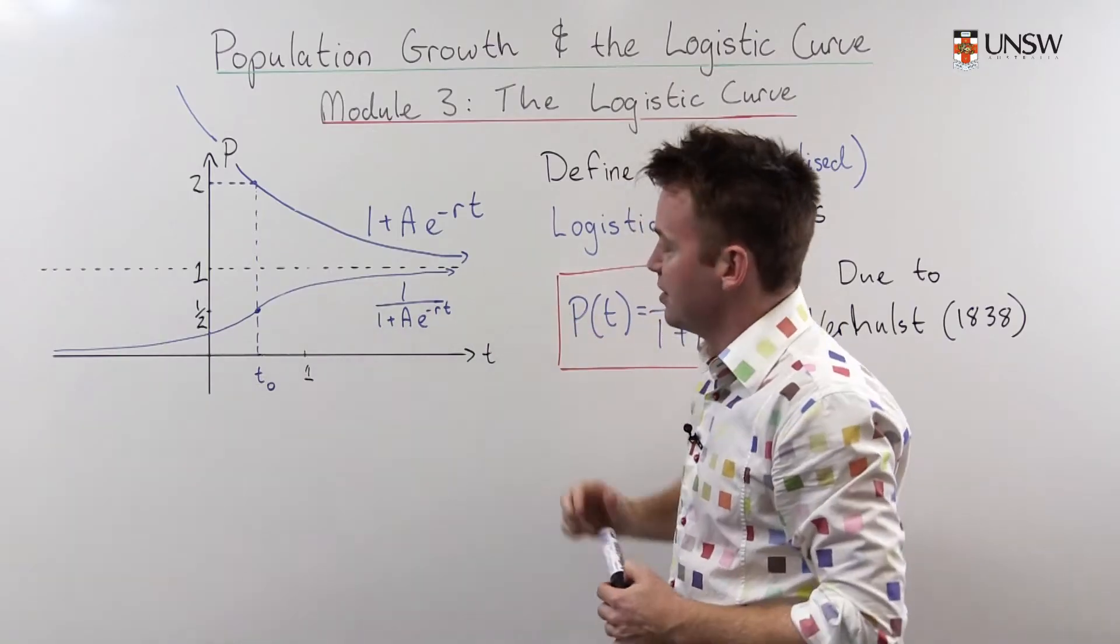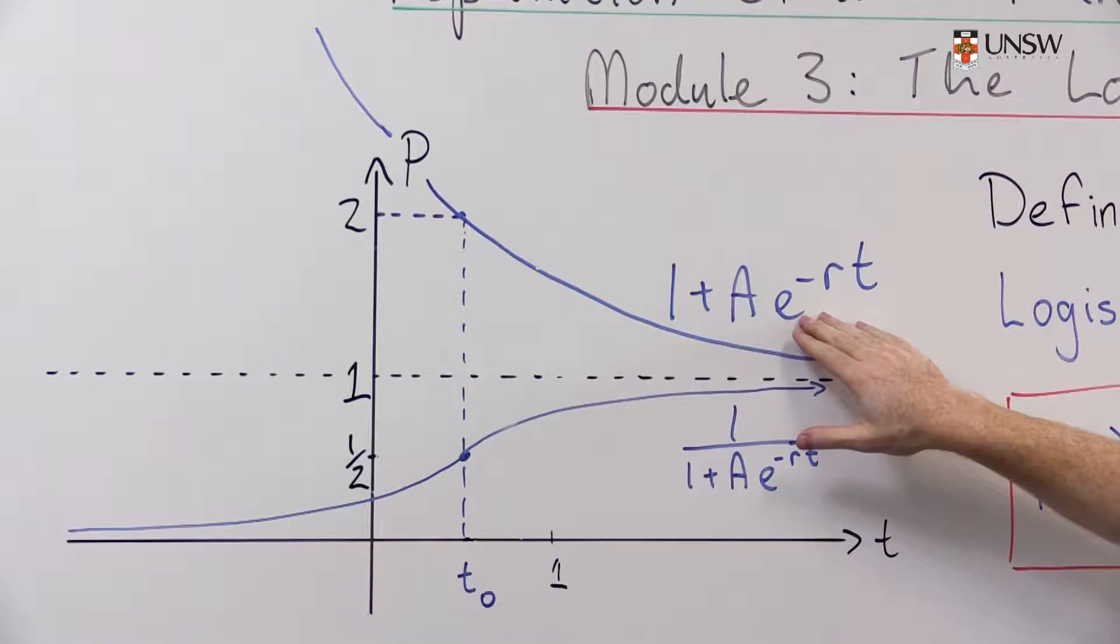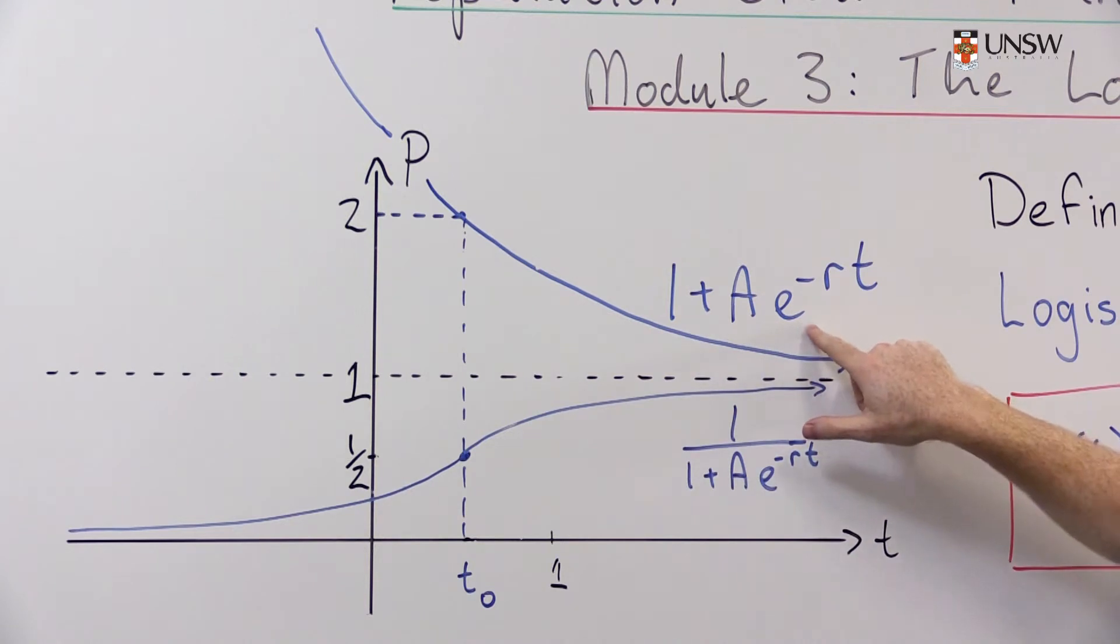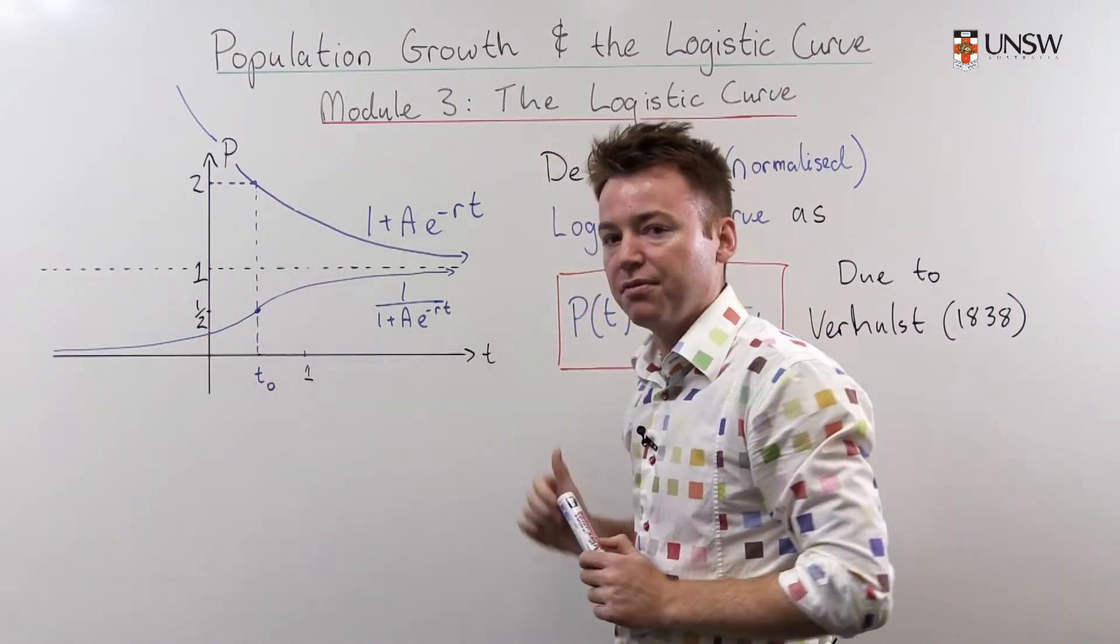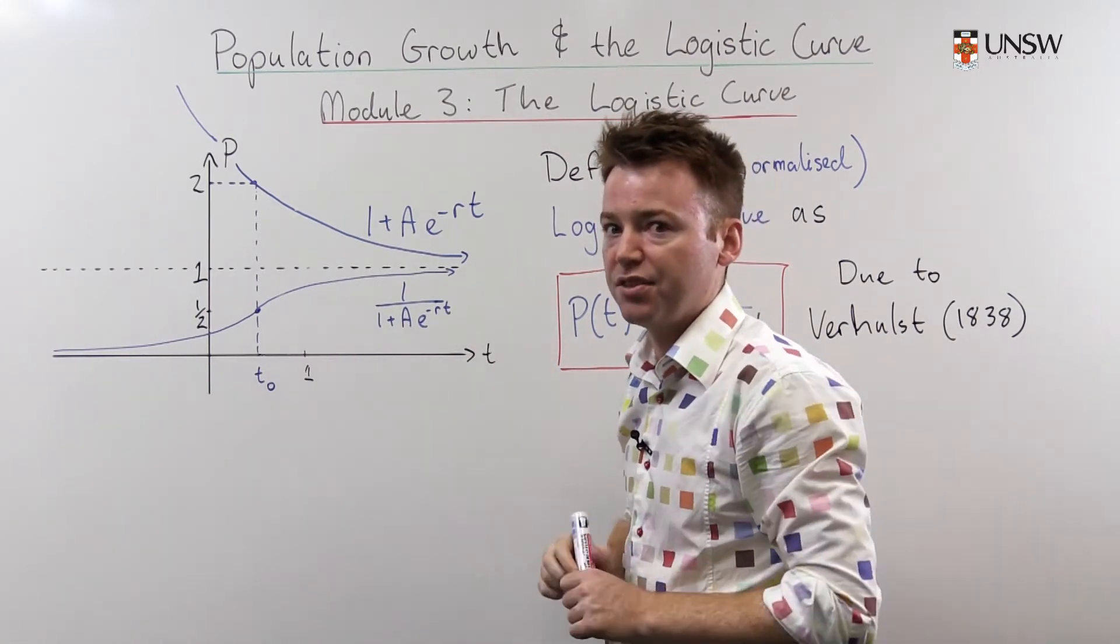In order to understand this curve let's turn to the exponential function. Up here we have the function just 1 plus some constant a times e to the negative r which is another constant times t which we can see is this exponential decay curve limiting to one. So as time gets very large this curve just goes to one. If we take the reciprocal of this curve then we have the logistic curve or the normalized logistic curve.